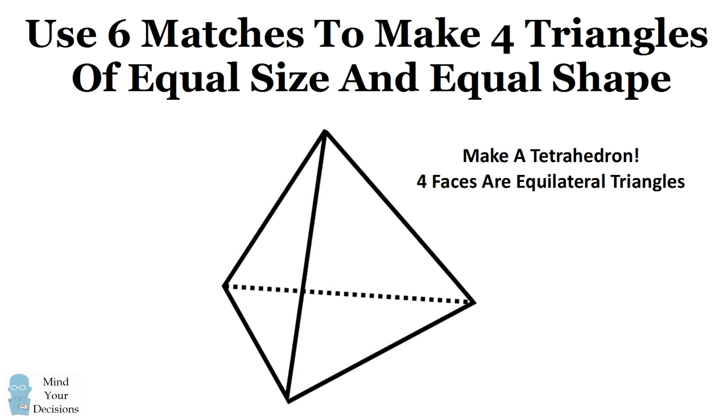There are six edges in the shape, and that's how you can use six matches to make four triangles of equal size and equal shape.